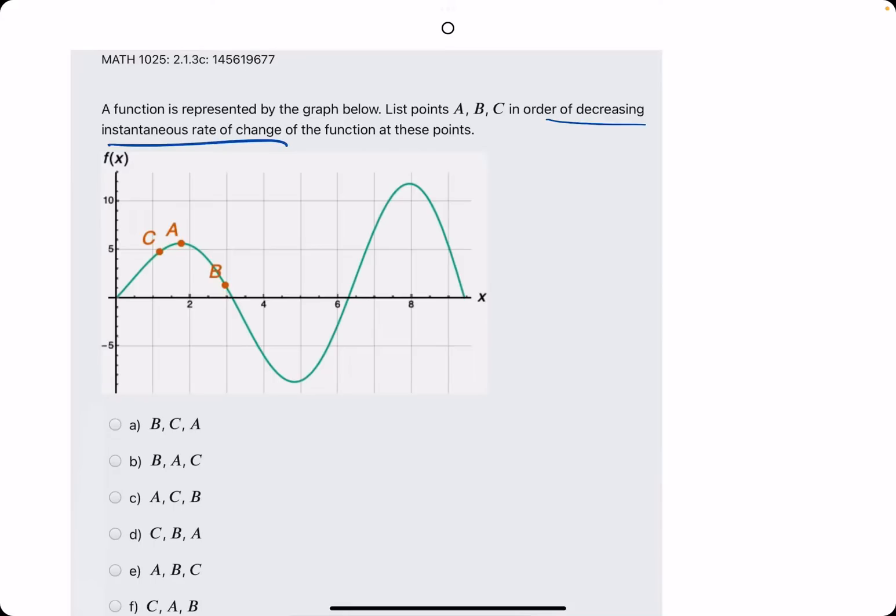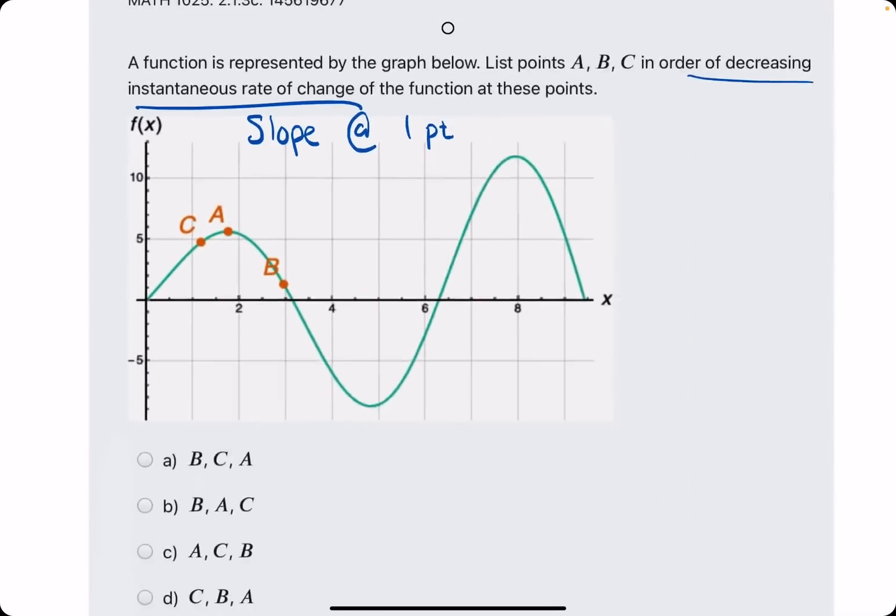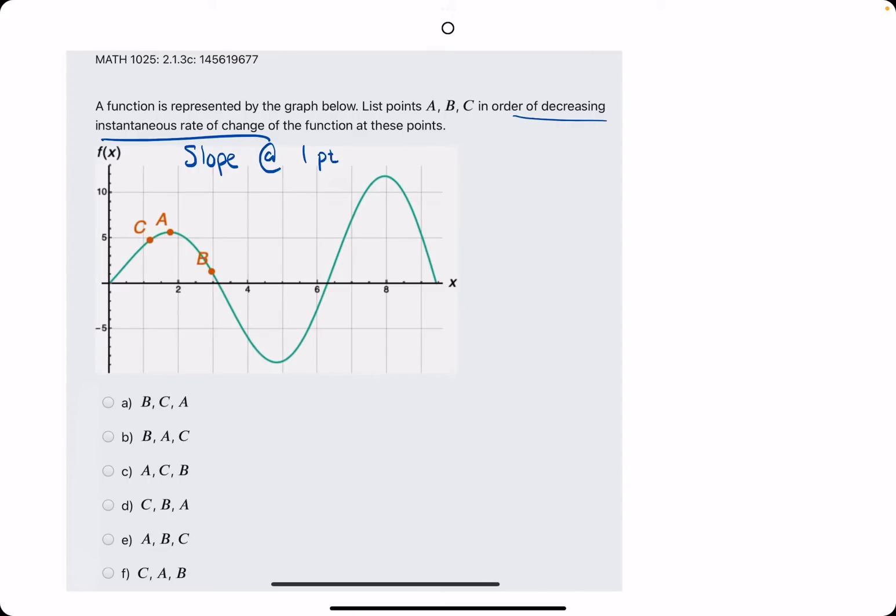Anytime you see instantaneous rate of change, whenever you see that phrase, it just means the slope at one point. So they're basically saying, can we find something out about these slopes at A, B, and C and order them from most positive slopes to most negative slopes.